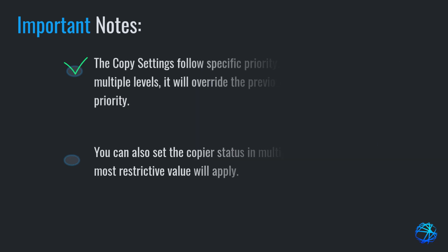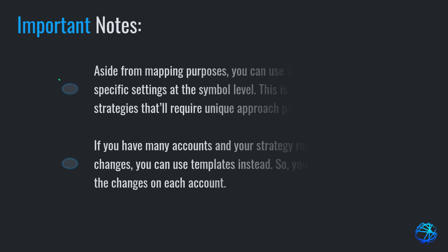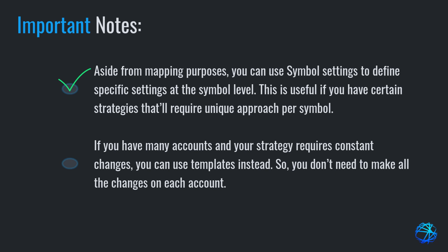The copy settings follow specific priority — if you set any settings in multiple levels, it will override the previous one according to their priority. You can also set the copier status in multiple levels; the most restrictive value will apply. Aside from mapping purposes, you can use symbol settings to define specific settings at the symbol level, which is useful if you have certain strategies that require a unique approach per symbol. If you have many accounts and your strategy requires constant changes, you can use templates so you don't need to make all the changes on each account.